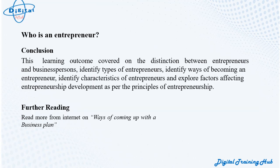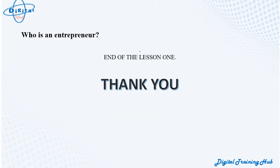Conclusion: In this lesson, the learning outcome covered the distinction between entrepreneurs and businesspersons, identifying types of entrepreneurs, identifying ways of becoming an entrepreneur, identifying characteristics of entrepreneurs, and exploring factors affecting entrepreneurship development as per the principles of entrepreneurship. Further reading: read more from the internet on ways of coming up with a business plan. End of Lesson 1. Thank you for watching and listening to this lesson. See you in the next video. Remember to hit the subscribe button and turn on notifications to receive alerts when new content is released.